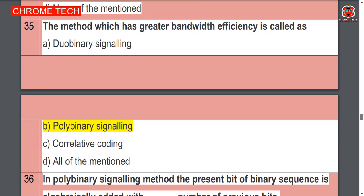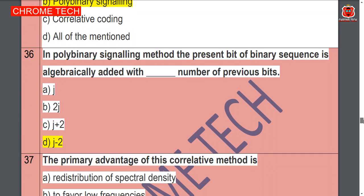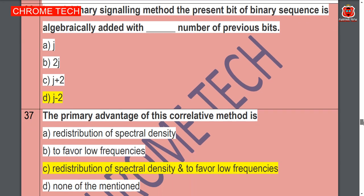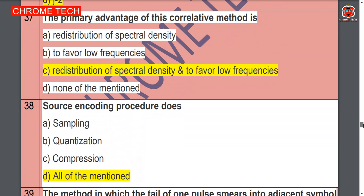— polybinary signaling, option B is the correct answer. In the polybinary signaling method the present bit of the binary signal is algebraically added with J−2 number of previous bits — option C is the correct answer. The primary advantage of the correlative method is redistribution of spectral density to favor low frequencies.